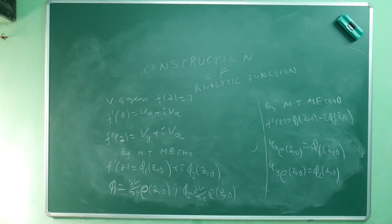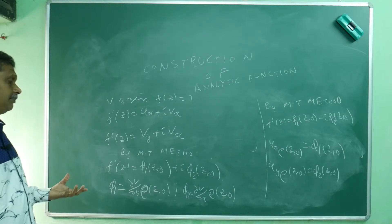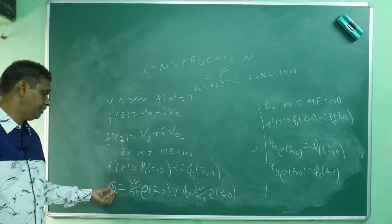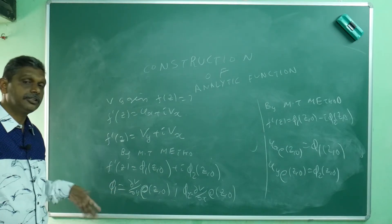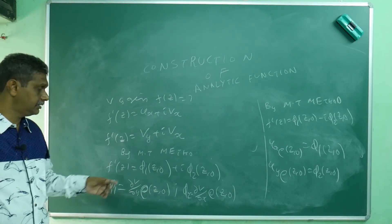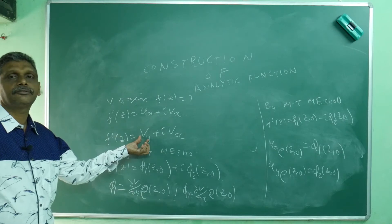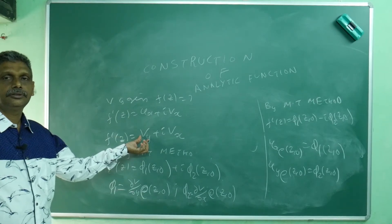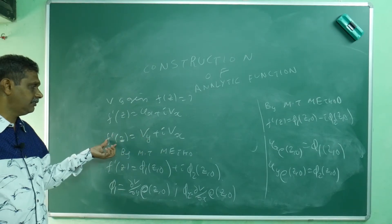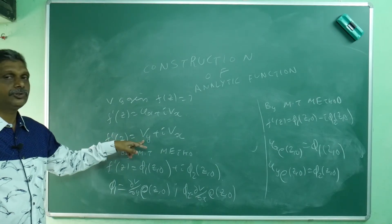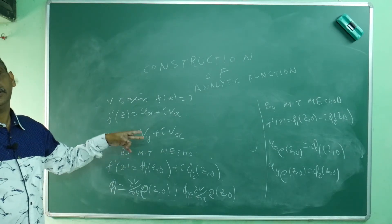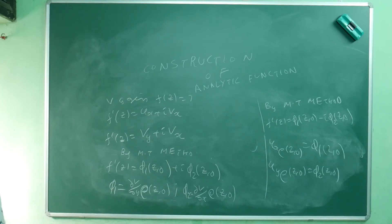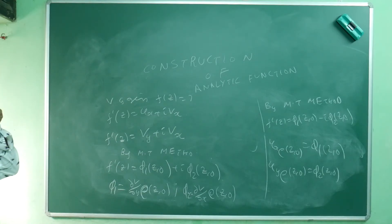So this is the way of doing it. Some people confuse φ₁ as always being the x-derivative — no, I am just calling the first function φ₁. When v is given, φ₁ = ∂v/∂y at (z, 0). This is the story of finding f(z).